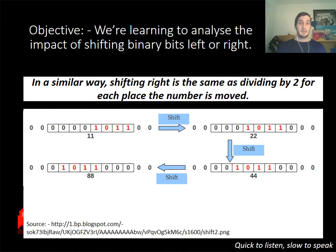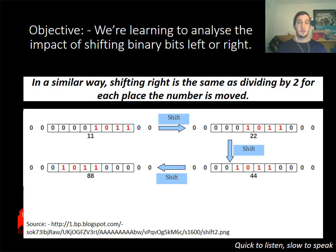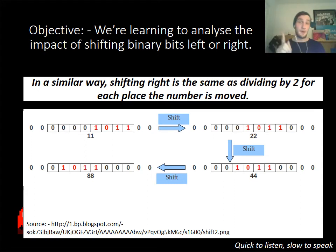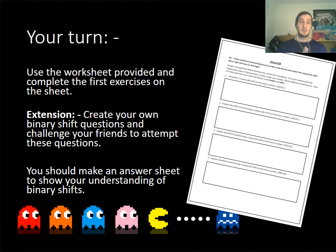Have a look at this. As I shift to the right, I actually start losing digits. I can divide by 2 each time it moves to the right, but eventually I'm going to lose accuracy. So you need to be aware of that.